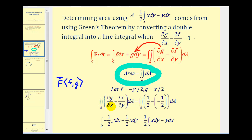then the partial derivative of g with respect to x would be positive one-half and the partial derivative of f with respect to y would be negative one-half and that would give us the integrand of one because we'd have one-half minus negative one-half.